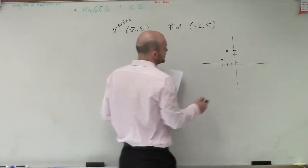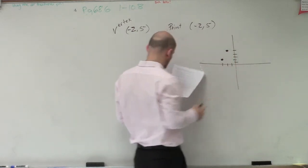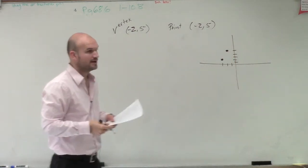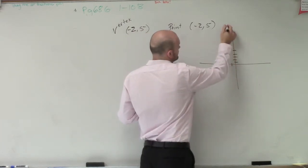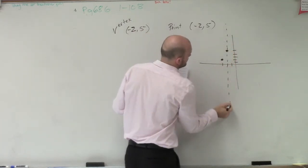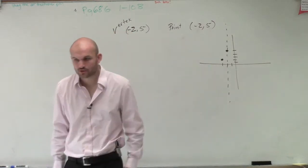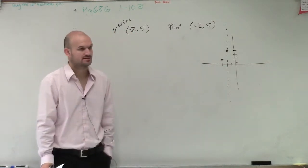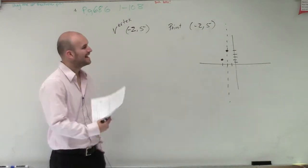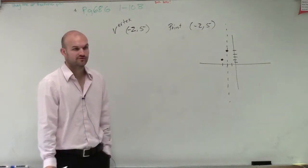So if we know it goes through this vertex, and if it has a vertical axis of symmetry, remember the axis of symmetry has to go through the vertex. So that's your line of symmetry, has to go through your vertex.